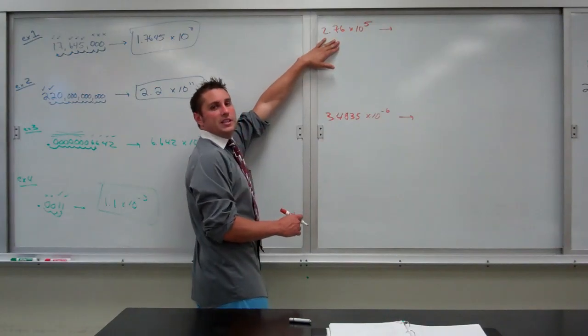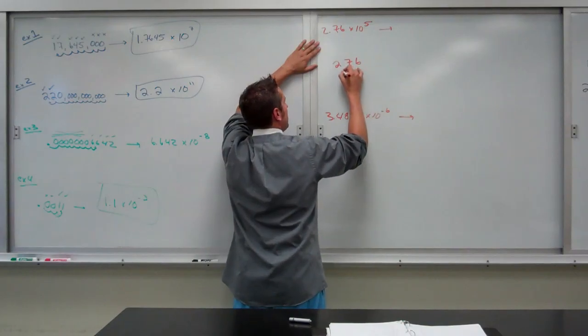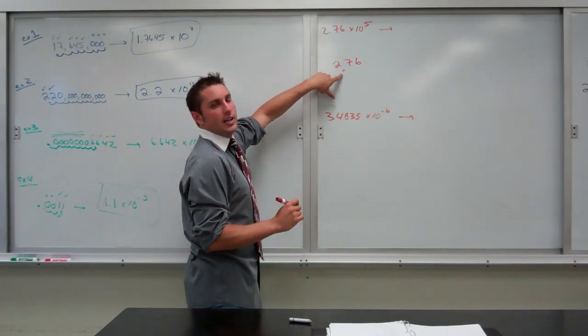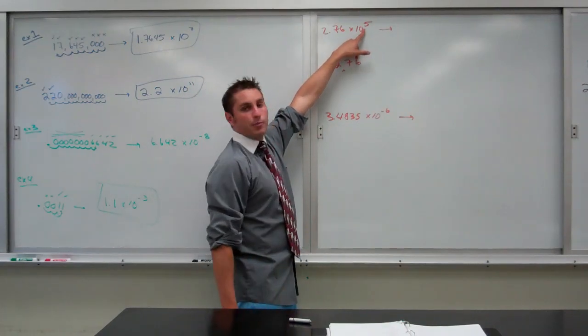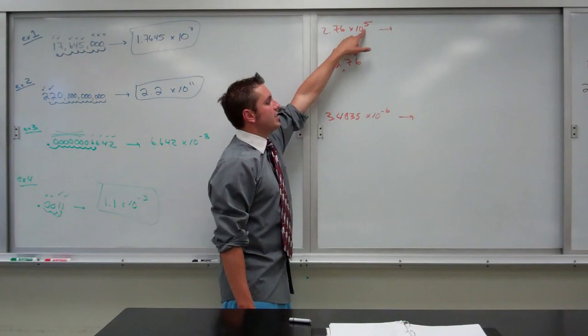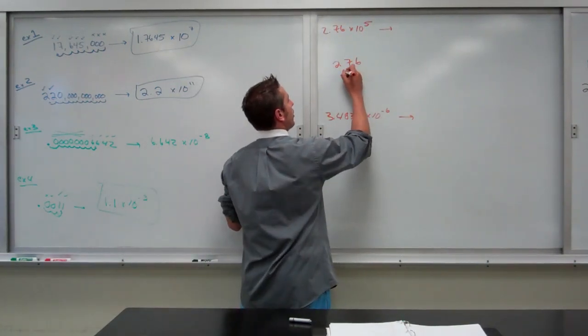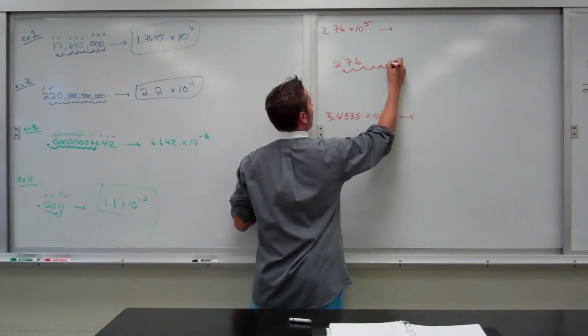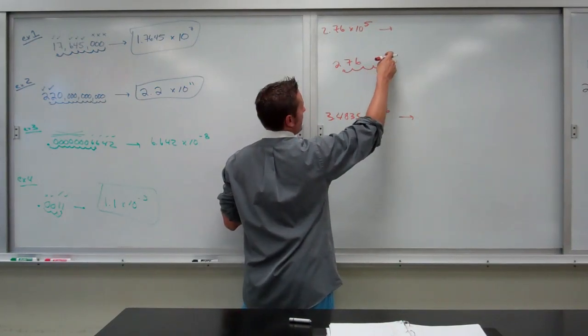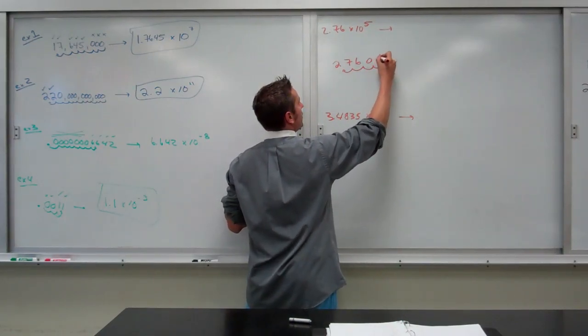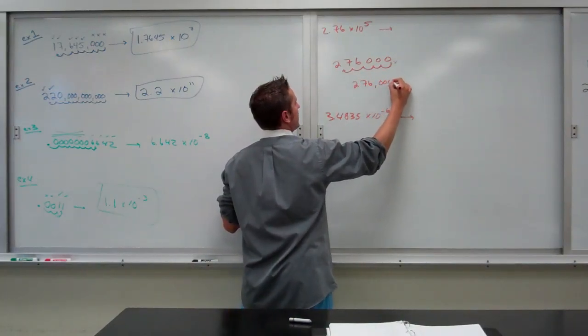So, if I look at this number here, 2.76 has 3 sig figs, so it will be 2, 7, 6. Here is where the decimal currently is. So, to get where my new number is going to be, I look at the exponent, which is a 5, and because it's positive, that means I have to move it to make it a large number. So, we're going to move 1, 2, 3, 4, 5. So, this is where the number will now end, and with these empty places, you have to put zeros, which means this number would be 276,000.